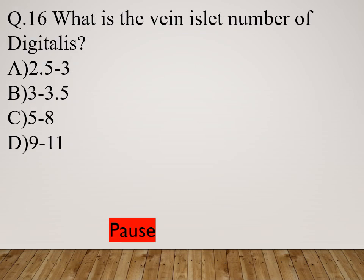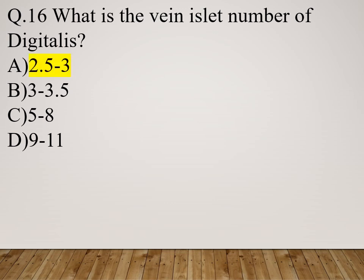Question 16: What is the vein islet number of Digitalis? Option A: 2.5 to 3. Option B: 3 to 3.5. Option C: 5 to 8. Option D: 9 to 11. The right answer is 2.5 to 3.